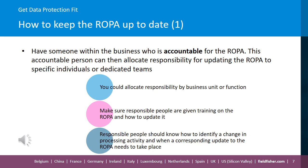Turning to look now at the practicalities of keeping the ROPA up to date. As a first step, you need organisational measures in place that means there is someone in the business with overall accountability for the ROPA. This accountable person is usually a senior figure in the business such as the data protection officer, who can allocate responsibility for updating the ROPA to certain individuals. If the organisation is big enough, you may have dedicated in-house privacy or compliance teams who are responsible for liaising with different business units and updating the ROPA accordingly. But if not, you could assign responsibility to individual business leaders to organise ROPA updates.